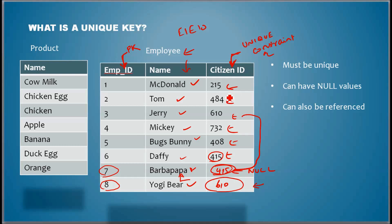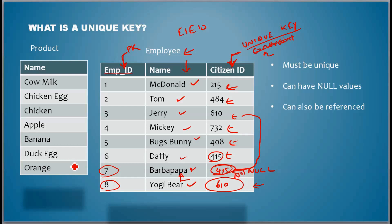To enforce this business rule, we create a unique constraint — basically something that constrains the value in a column to a particular rule. We create a unique key. The unique key enforces the uniqueness of the data, but it does not enforce the data to be not null — it allows null values.